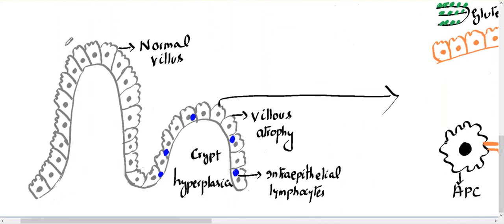In celiac disease, the pathology is mainly in the small intestine. Normally, the small intestinal villi absorb nutrients and water, which then enter the lamina propria and into the circulation. There are also a few intraepithelial lymphocytes whose job is to fight infection. In celiac disease, the villi are atrophied, there is an increased number of intraepithelial lymphocytes, and there is crypt hyperplasia. The crypts are located in between the villi — they are like stem cells that replenish dead epithelial cells.